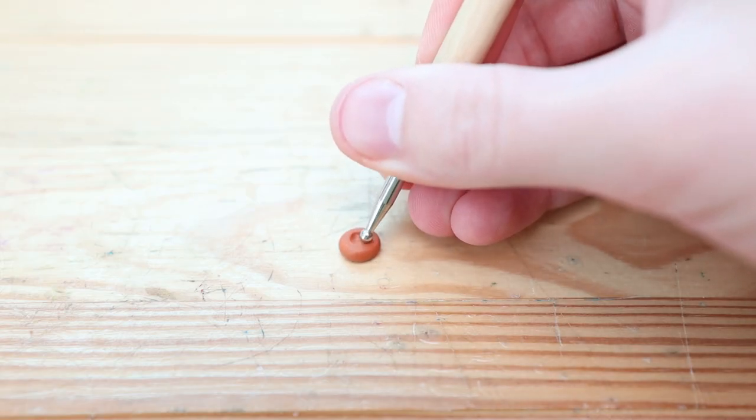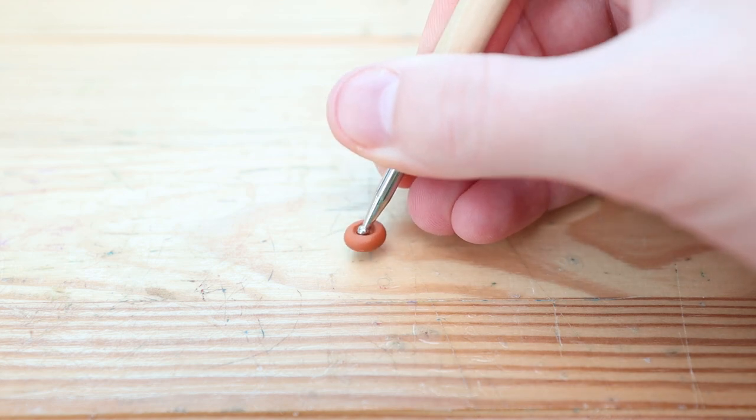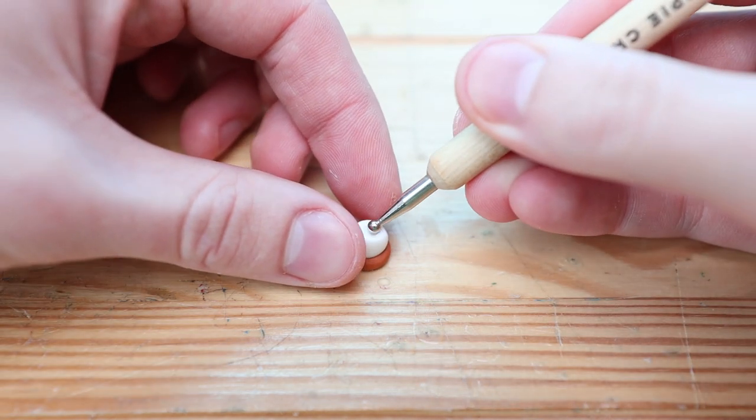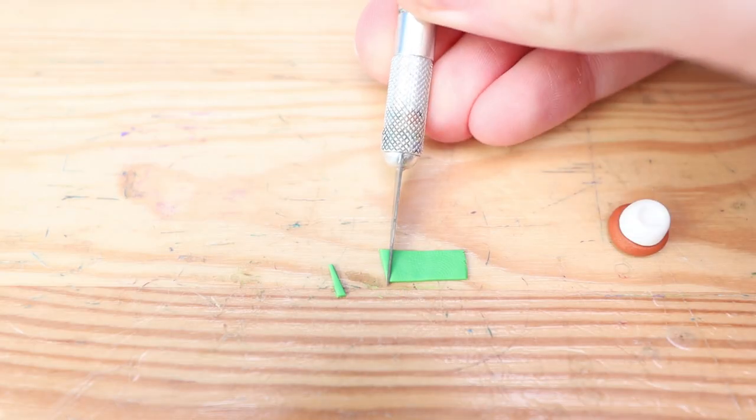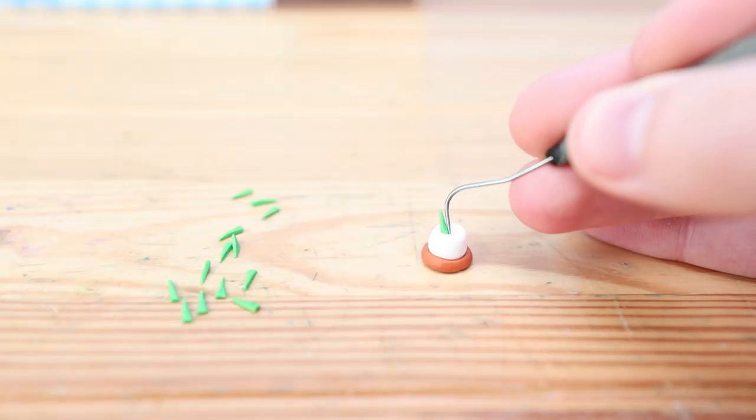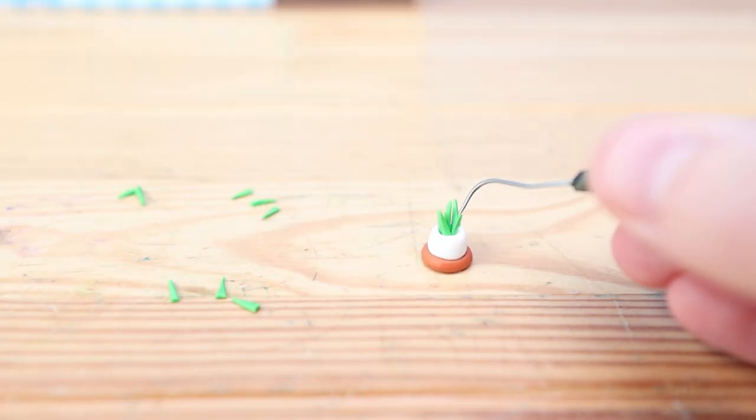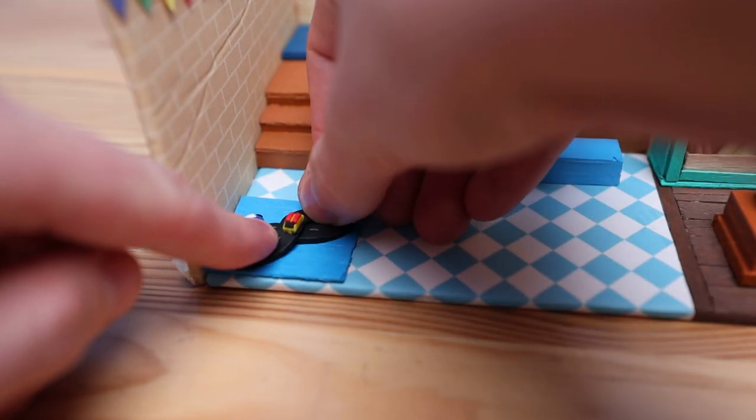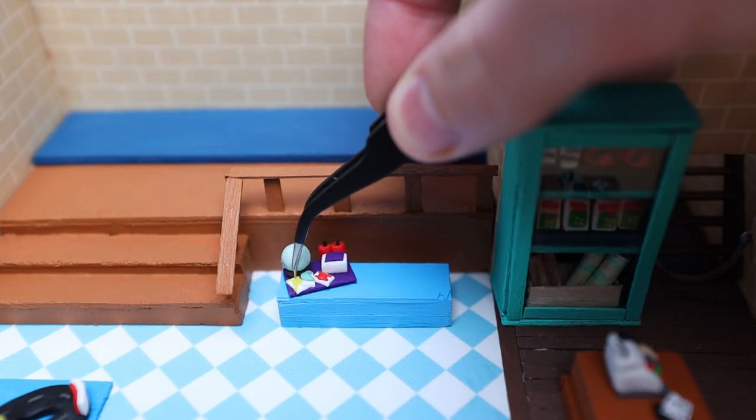And next up is some cat grass, because as you know I have three cats, and of course I had to add something cat themed into this video. So we're going to cut out these tiny little blades of grass, and carefully place them inside of the pot. After we bake those, we can place them down using some super glue.